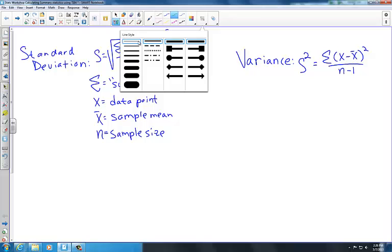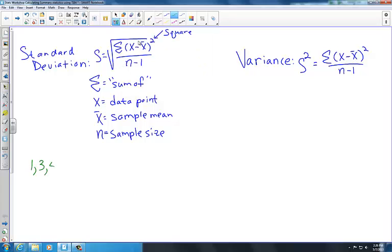Suppose I was given the following set of data: 1, 3, 5, 7, and 9. I want to find the standard deviation for this particular data set. Well, one thing that I notice is that in the formula for standard deviation, I need to know what my mean is. So I'm going to start by finding the mean.